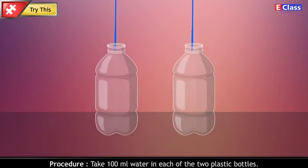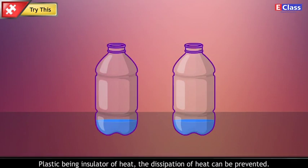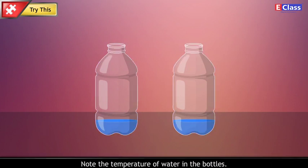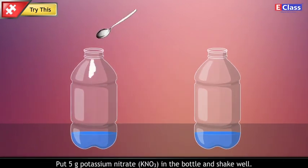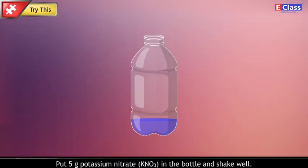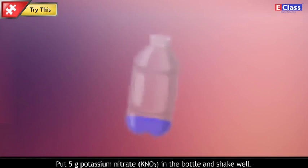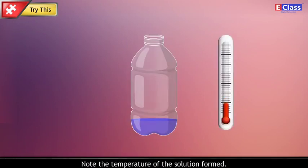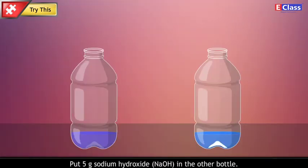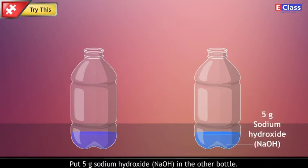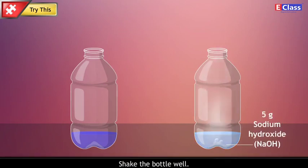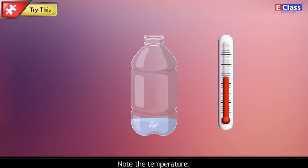Try this. Apparatus: Put 5g sodium hydroxide (NaOH) in each of the two plastic bottles. Plastic, being an insulator of heat, prevents the dissipation of heat. Note the temperature of water in the bottles. Put 5g potassium nitrate (KNO3) in one bottle and shake well. Note the temperature of the solution formed. Put 5g sodium hydroxide (NaOH) in the other bottle, shake well, and note the temperature.